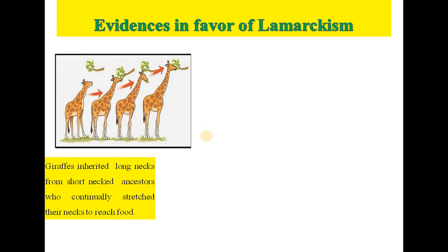As the climatic conditions changed, the rich vegetation changed to few trees. The leaves of these trees were the only source of food for the giraffe. The ancestors of the giraffe had to stretch their neck to obtain the leaves on the trees. This gradual stretching of the neck led to an increase in the neck and forelimbs, which was then transmitted to the next generation — thus giraffes have long necks and forelimbs.